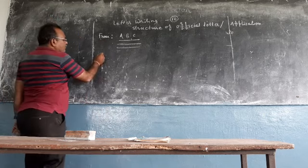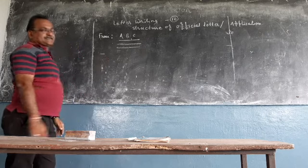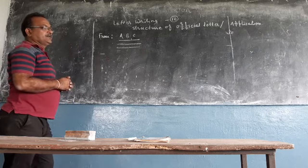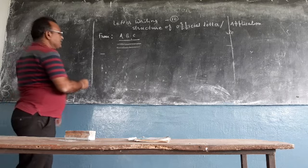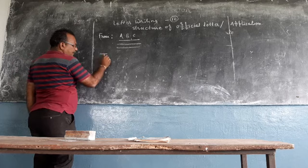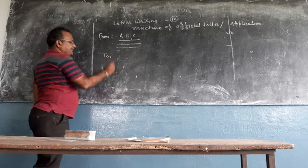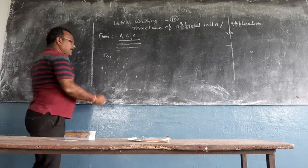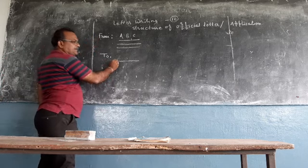Then we have to write the address. Then we have to write receiver address. Address means what? We are sending a letter to that particular office. We have to apply an application to that office, write it to, then comma. The post or the head of that office, we have to write in the first line.